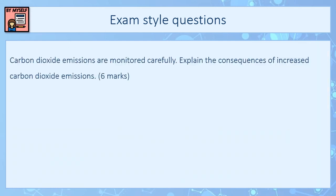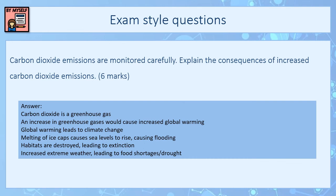The final exam style question is worth six marks. Think about how carbon dioxide emissions and their consequences link together. Carbon dioxide is a greenhouse gas, and an increase in greenhouse gases causes increased global warming, which leads to climate change. Consequences of climate change include melting of ice caps causing sea levels to rise and flooding, habitat destruction potentially leading to extinction of species, and increased extreme weather events leading to food shortages or drought.